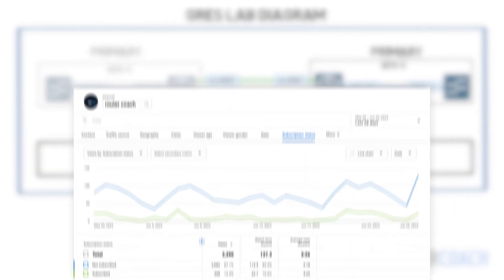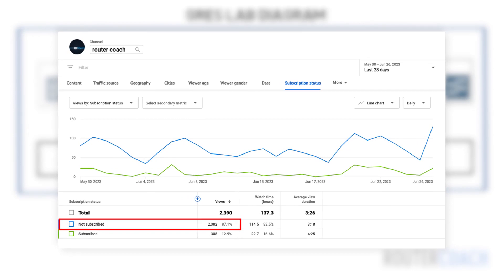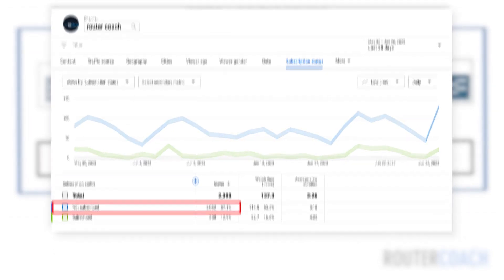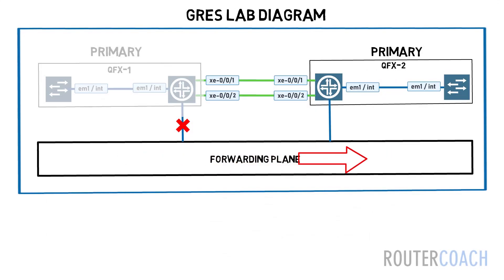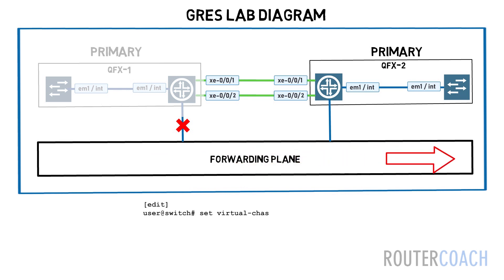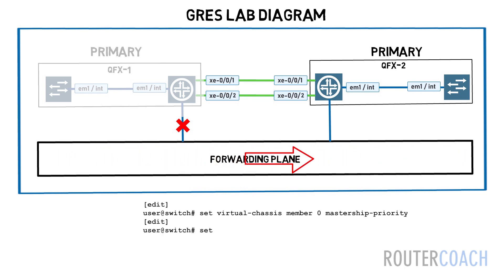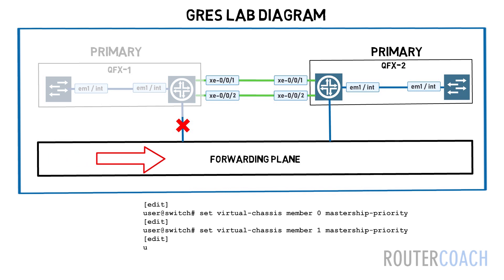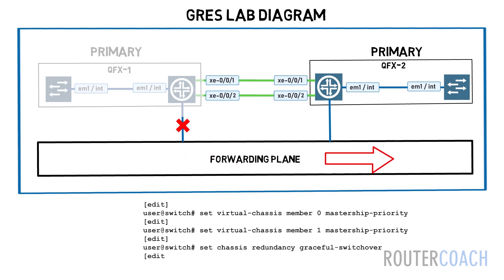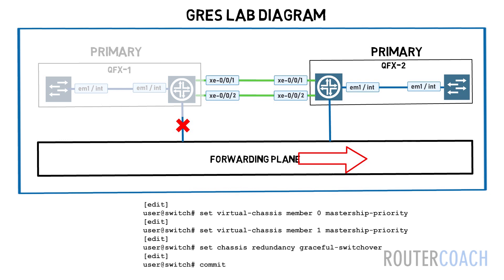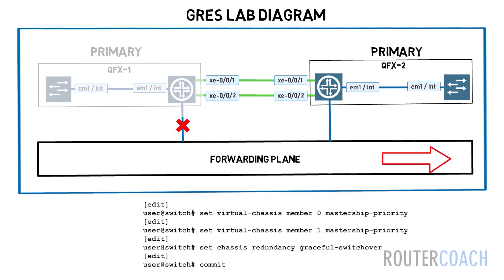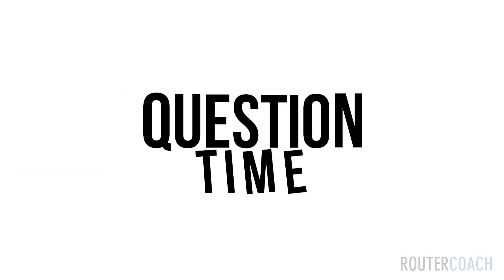If you're enjoying the content, please consider subscribing as 86% of viewers aren't currently subscribed. To set up the virtual chassis configuration to use GRES, we establish two devices first and assign the highest priority to both members as they are the ones that we want to be the primary and backup routing engines. Then we configure Graceful Routing Engine Switchover and commit the configuration.